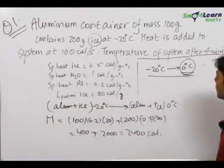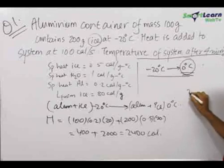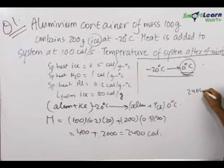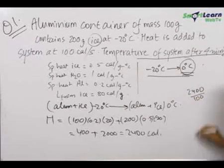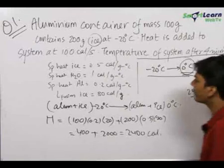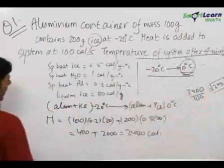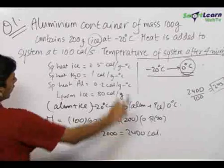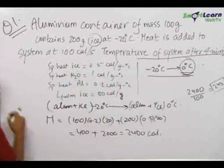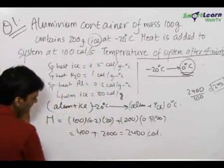The time taken is equal to 2400 divided by 100 calories per second, which equals 24 seconds. So we are done with only 24 seconds, and the total time we have is 4 minutes, so we can heat the system more.